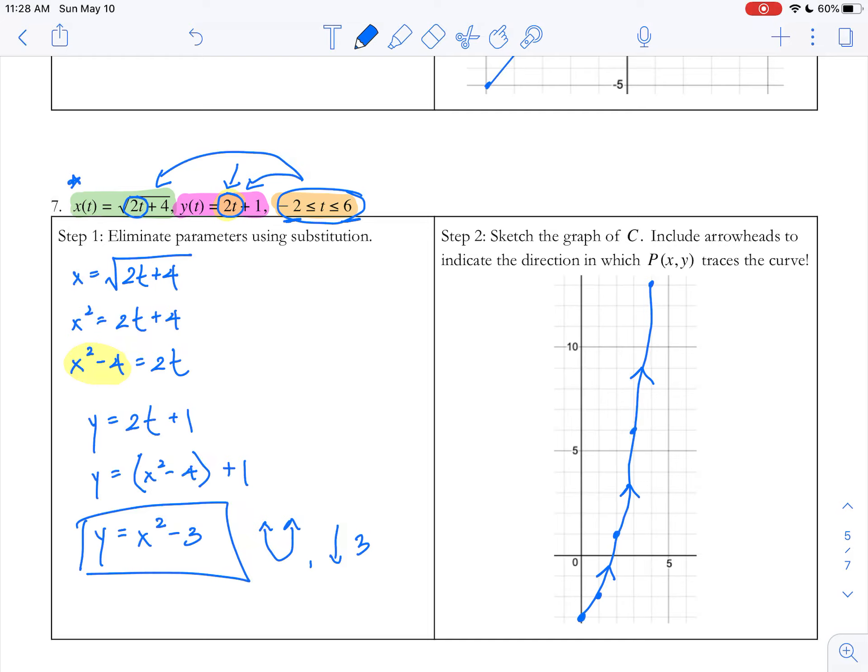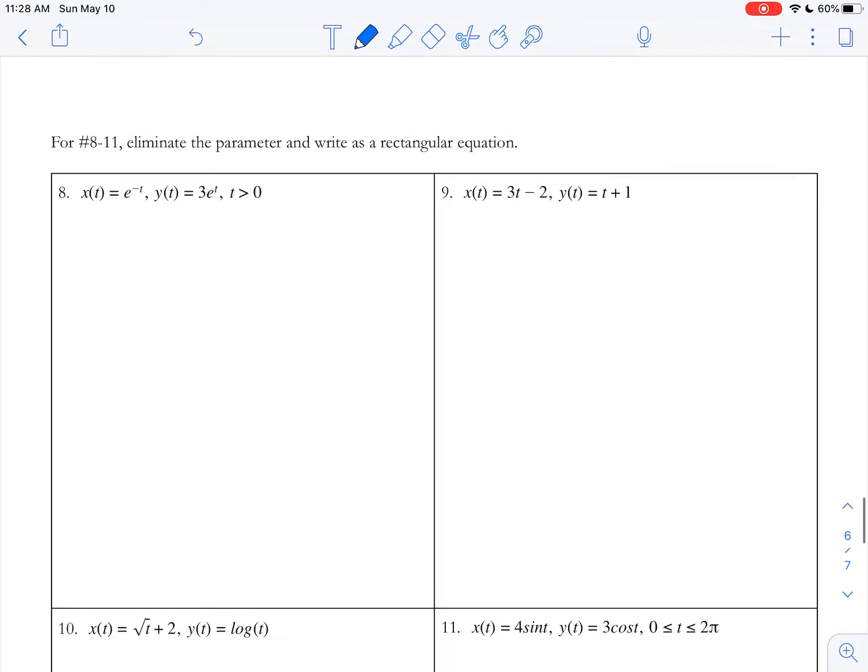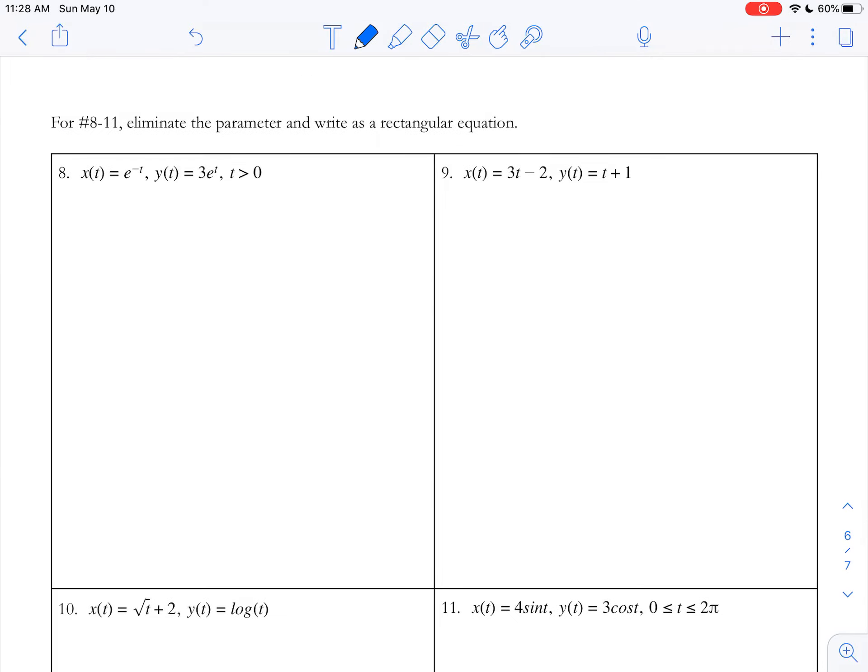So I'm going to connect my points in that direction and include some arrowheads so it's clear what direction I'm going in. In this way, I can eliminate parameters and use that to help me sketch the graph I'm interested in.